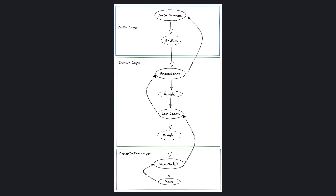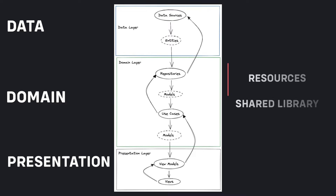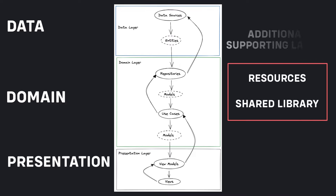As we can see in the diagram, we have three main layers of the architecture: data, domain, and the feature layer, which is the same as the presentation layer. We also have two additional supporting layers, the resources and shared library.